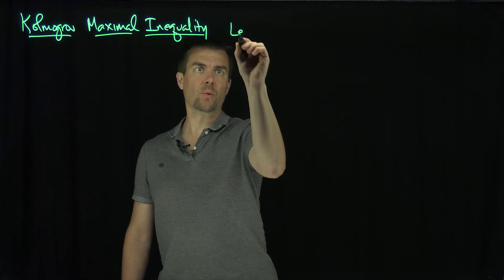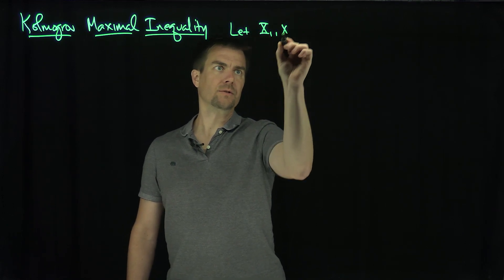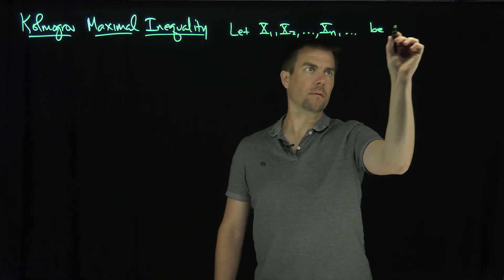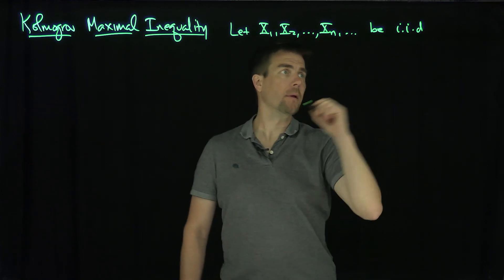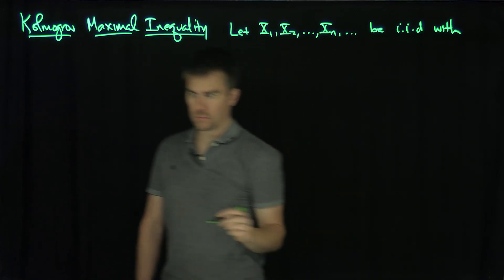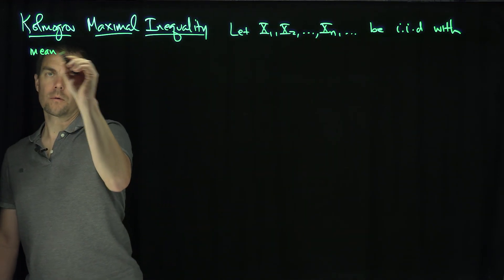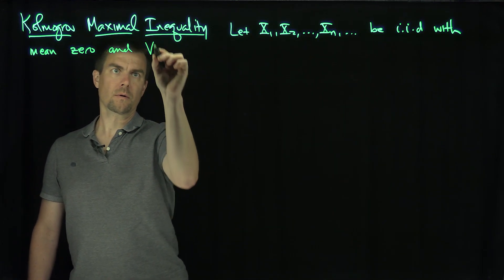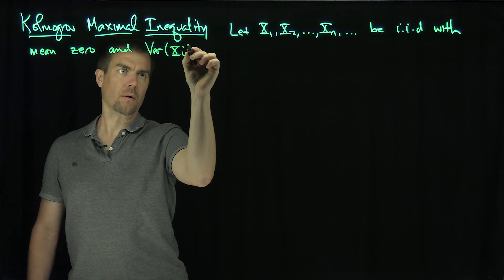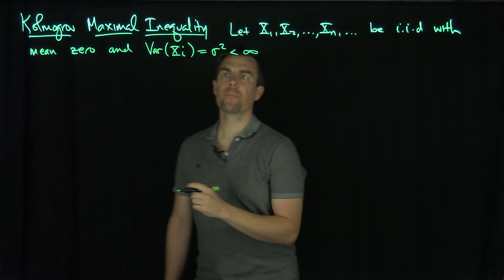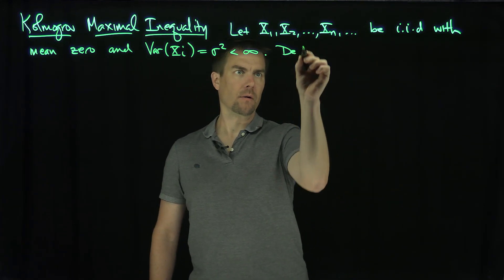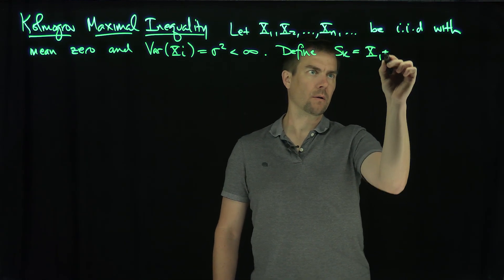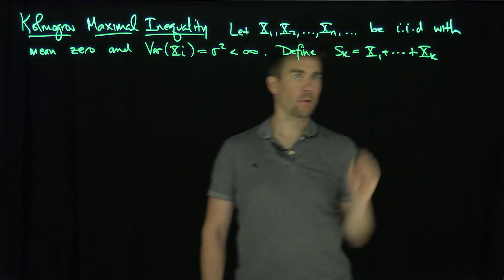It says: let x1, x2, ..., xn be iid with mean 0 and bounded variance. Then define sk to be the partial sums — just a random walk — so sk is the partial sum up to index k.